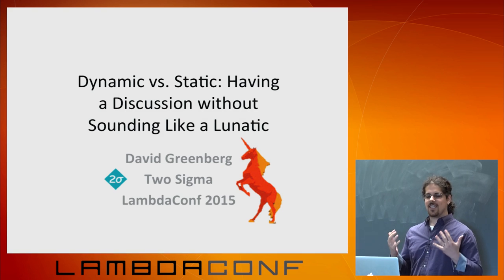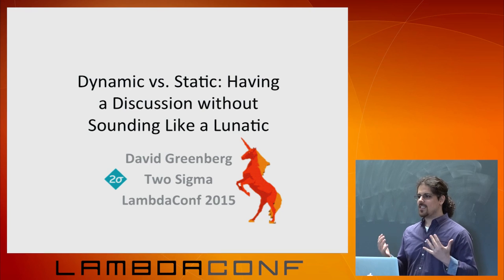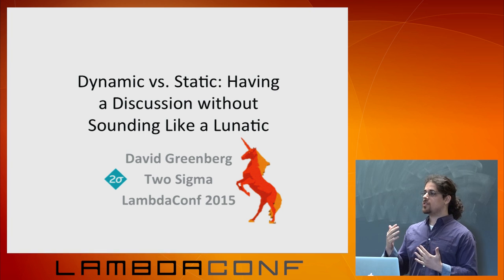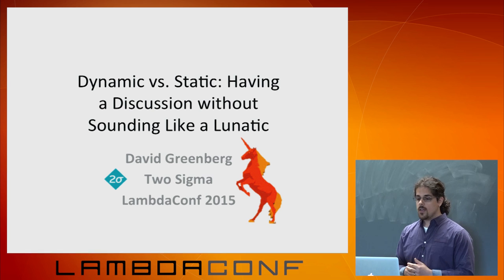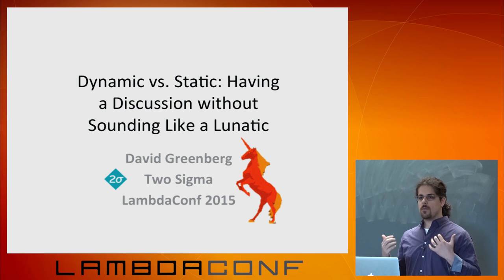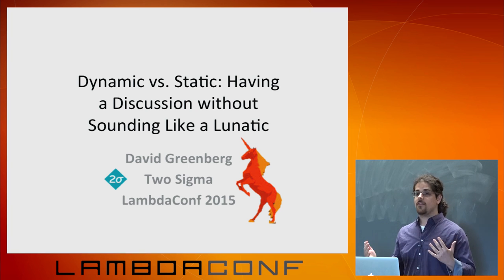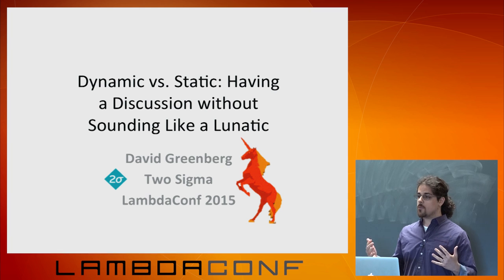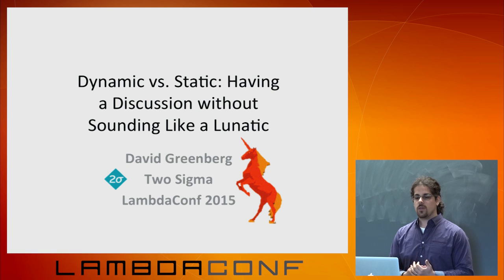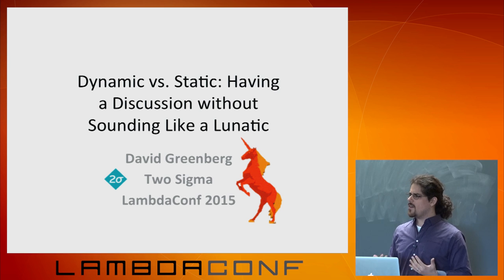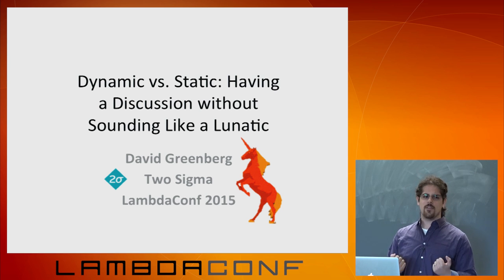What we're going to talk about is how to discuss static and dynamic languages — how to convince people, your coworkers or your friends, why you should use a functional language, why you should use Haskell or Clojure or whatever — and how to do this in a way that doesn't turn people against you very quickly. This is drawing on my experiences working at a company that was exclusively a Java and C shop, growing up to the point where we have a large Clojure development team and later brought in Scala.